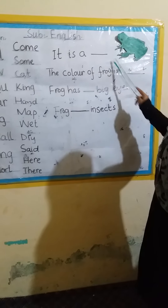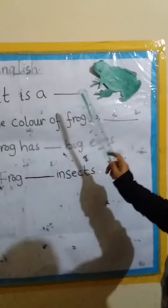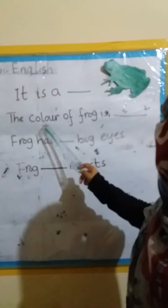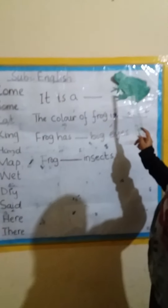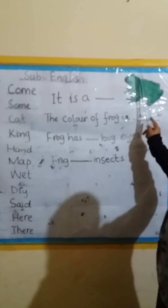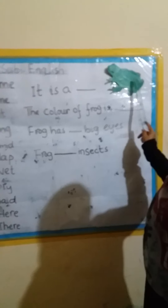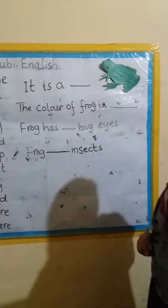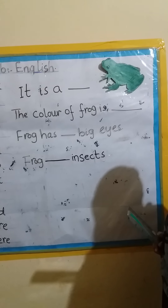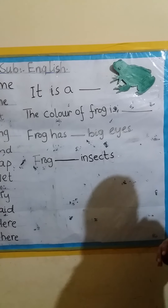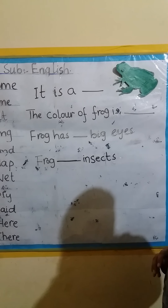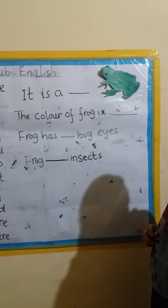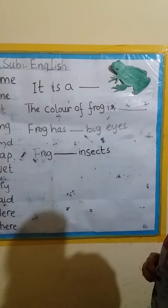Okay, what is this? See here — we will again write the sentences and fill in the blanks to complete the sentence. First, let's see what is this? This is a frog. It is a frog and frog has two big eyes. The color of frog is green.